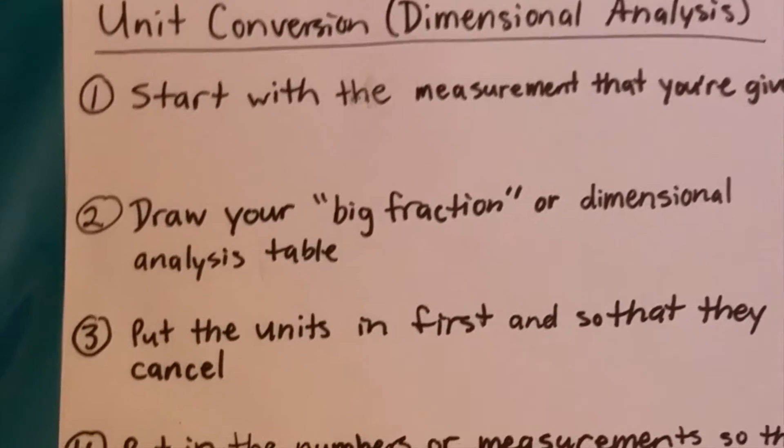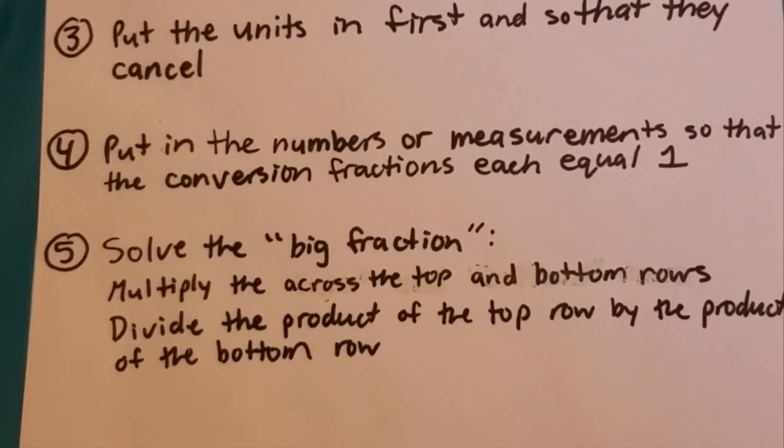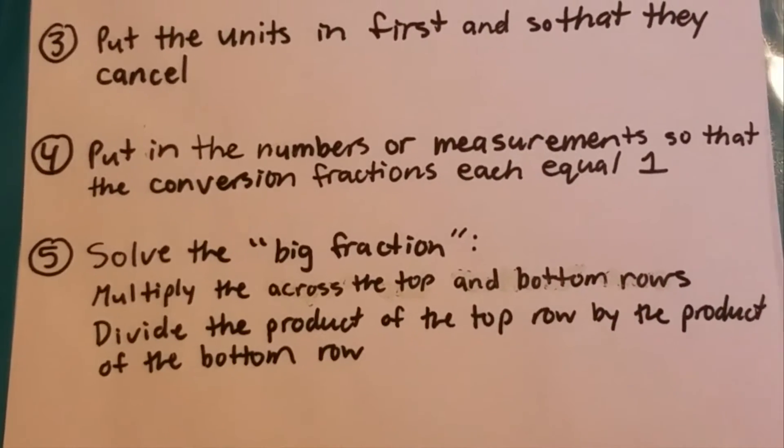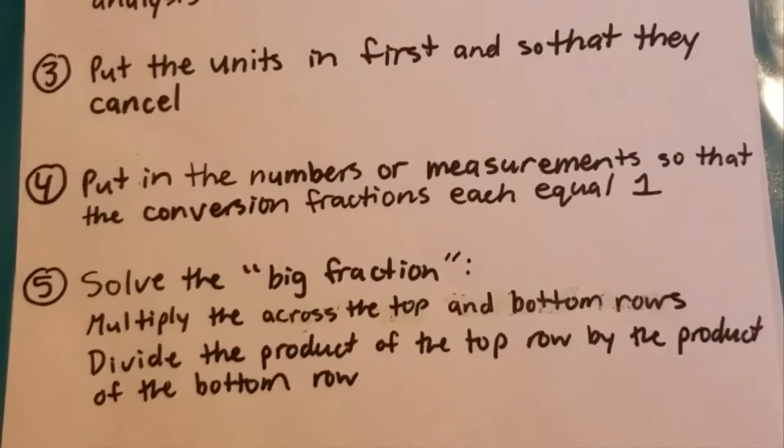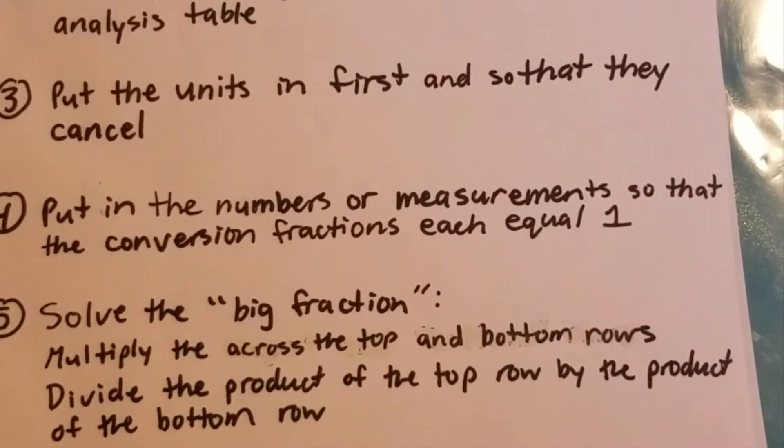Step two is to draw the big fraction or dimensional analysis table. Step three, you put the units in first so that they cancel. Number four, put in the numbers or measurements so that the conversion fractions equal one. And number five, solve the big fraction.